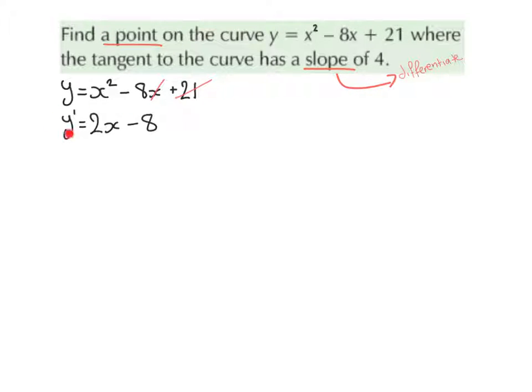So the derivative is going to be 2x minus 8. Now we're told in the question that the slope of this tangent is 4, and we found the slope to be 2x minus 8. So all we have to do here is equal the derivative to 4.